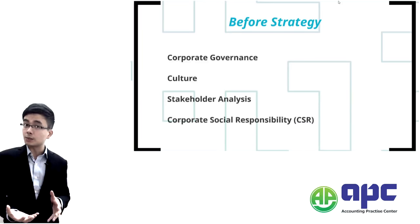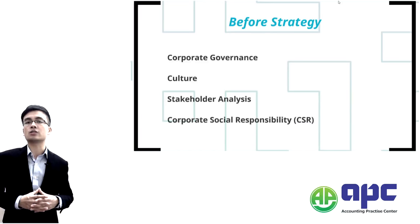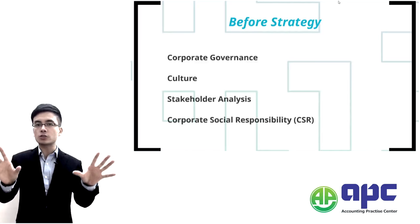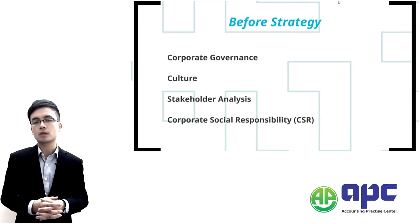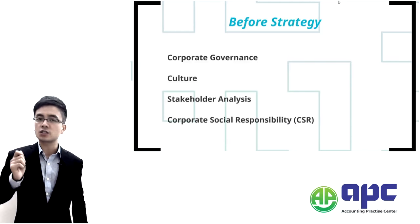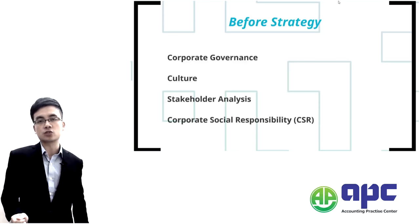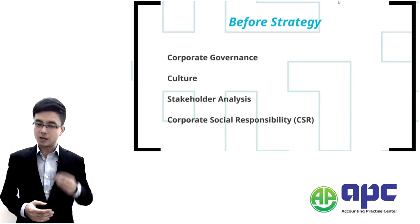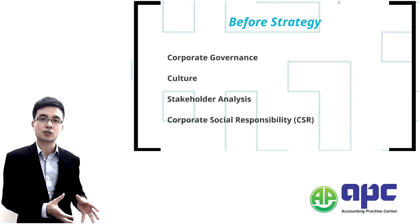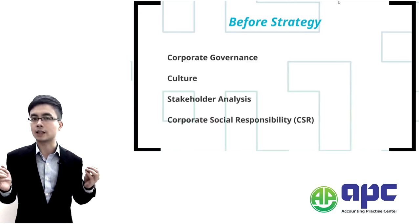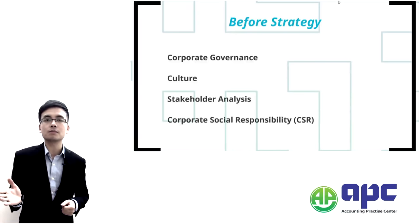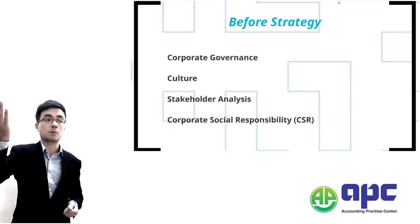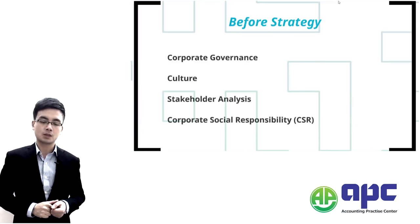Before setting up your strategy, you also have to consider stakeholders, and we will use a model called Mendelow's Matrix to classify all those stakeholders and how to deal with them. Stakeholders are people who would impact the company or be influenced by the company. For example, customers impact the company — if we don't have enough customers buying our product, we don't make profit and the company cannot survive. At the same time, customers are impacted by the company — if our company puts up prices, fewer customers may buy from us.